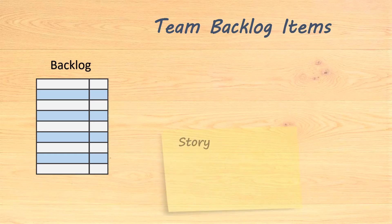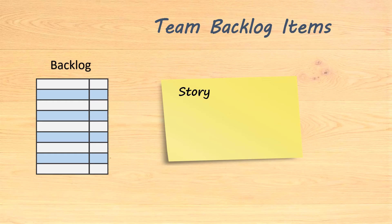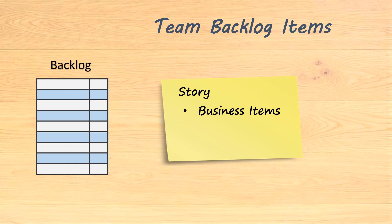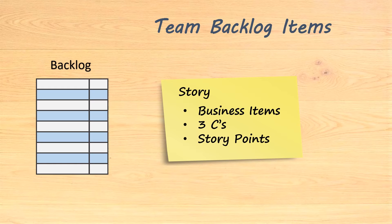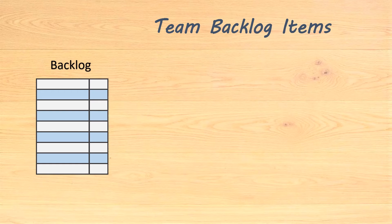The first type of item is the story, already defined in Jira by default. I can easily say that this is the most famous element. In this model, it represents the business items that the team will implement, also known as user stories. Because they are business-oriented, I recommend using the 3C structure suggested by Ron Jeffries: card, conversation and confirmation. In terms of relative sizing, I recommend using story points, which is the measure I use to determine the size of a backlog item.